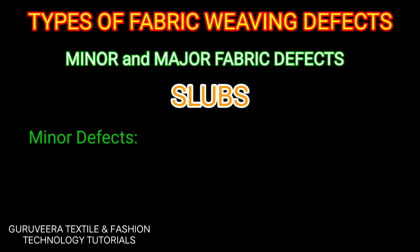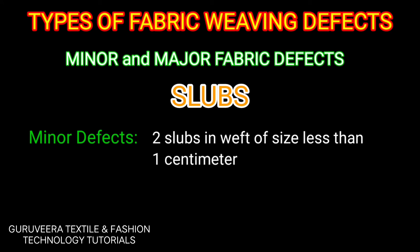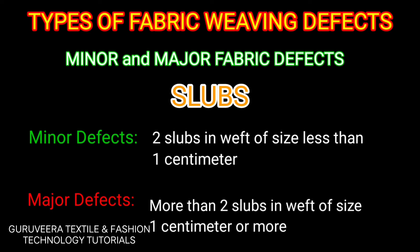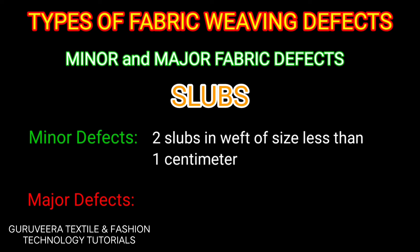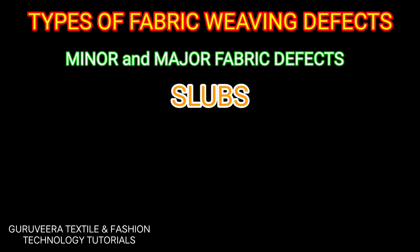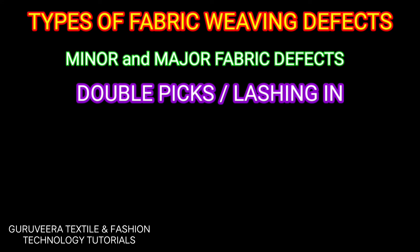Slubs usually occur due to yarn defects. Two slubs in the weft of size less than one centimeter are considered minor defects. These slubs come from the yarns used in weaving.